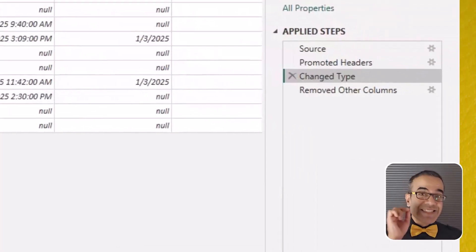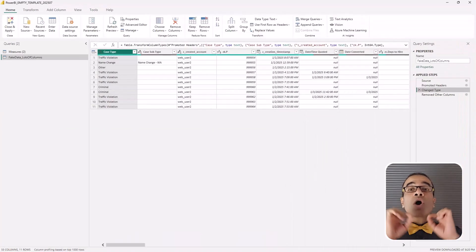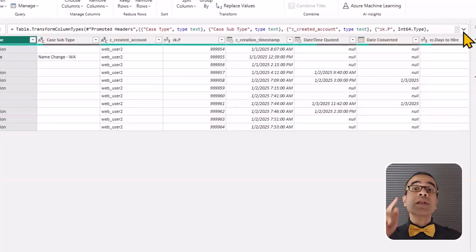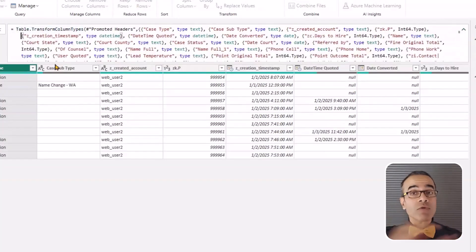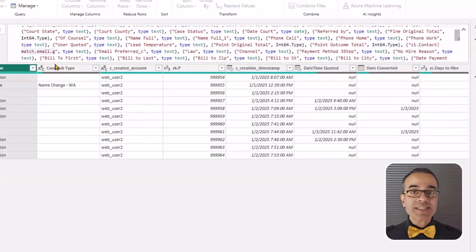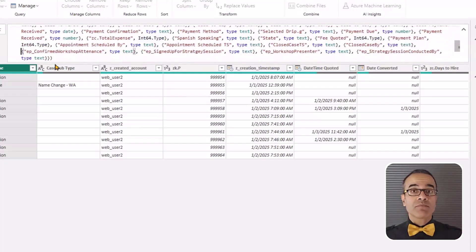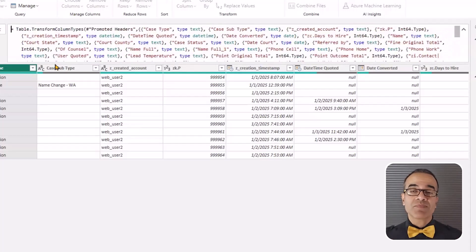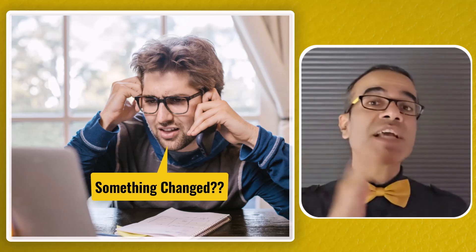So you might be thinking, Avi, what were you so upset about? Here's the big deal. The change type step creates a hard-coded dependency on every single one of those column names. If you look at that step, it lists out all of them, even the ones I don't care about. Now imagine something changes on the client side.